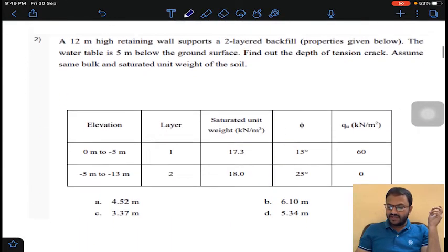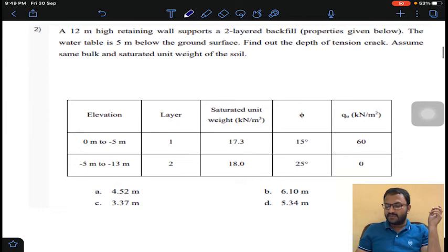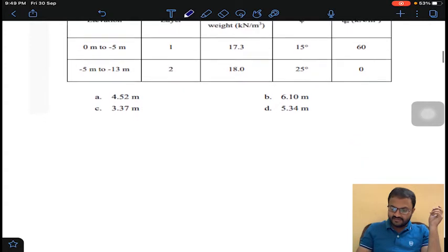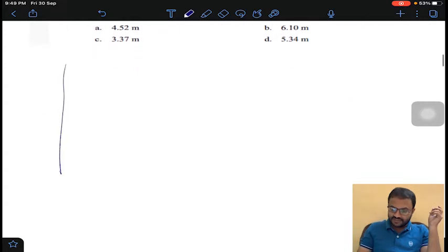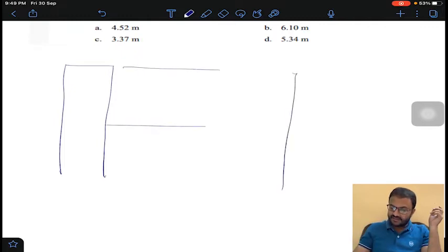A 12 meter high retaining wall supports two-layered backfill with properties given below. The water table is 5 meters below the ground surface. Find out the depth of tension cracks. Generally for two-layered soil, the distribution diagram is like this.